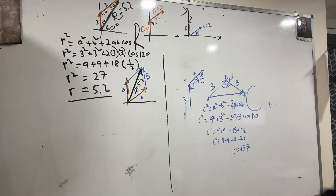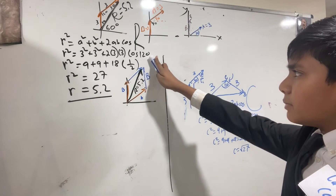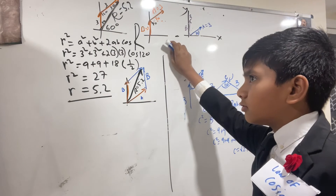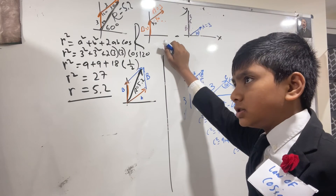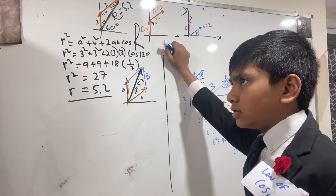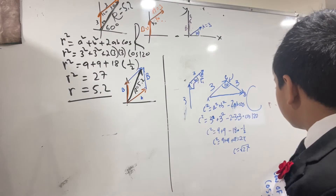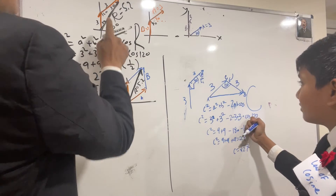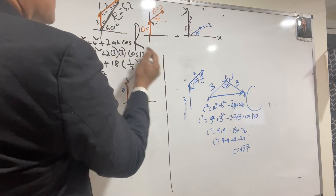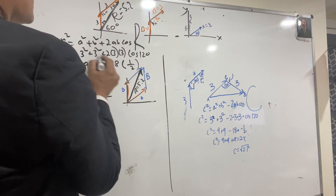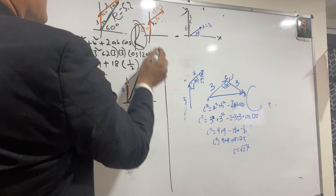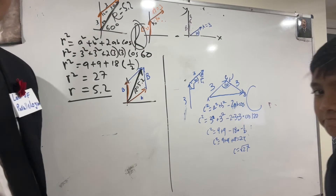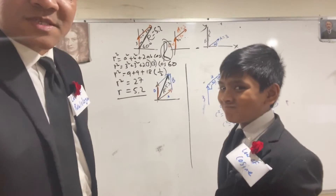Wait — cosine 120 is used as one-half here. Shouldn't that be sine 30 or something? Cosine 120 is one-half. No, it's negative one-half. No, cosine 120 is one-half. Oh — cosine 60. I should have written cosine 60. I'm an idiot. That's right. This is R and R is 60. Damn. R is 60. That was the mistake.